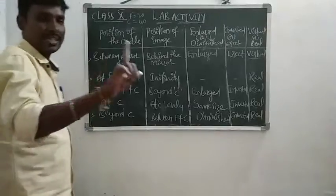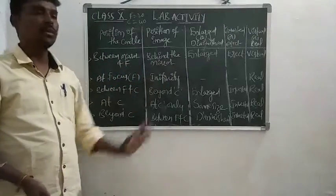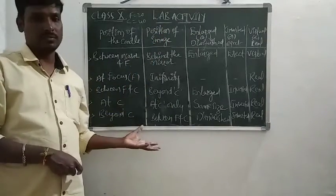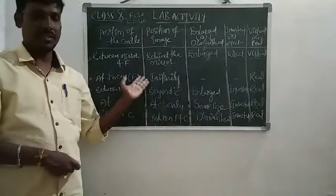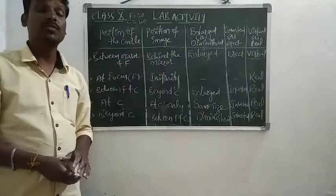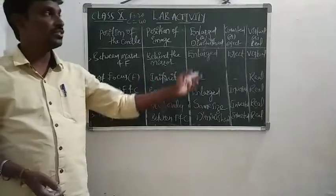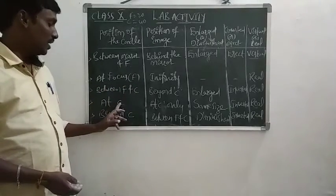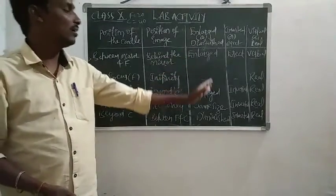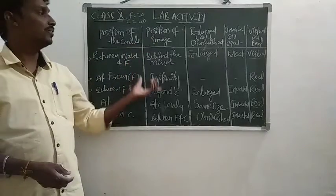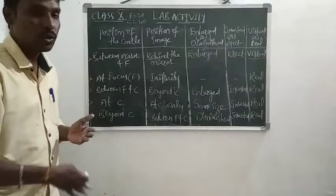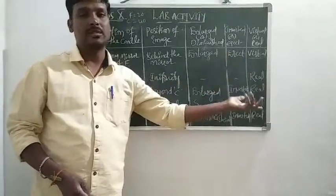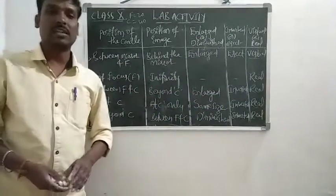Only one case is virtual — that is between mirror and F, where the image is behind the mirror only. So these are the results after completion of the lab activity. These are the five cases: between mirror and F, at focus, between F and C, at C, and beyond C — with the positions and characteristics of the images. In our next class, we are going to draw ray diagrams for these situations. Thank you.